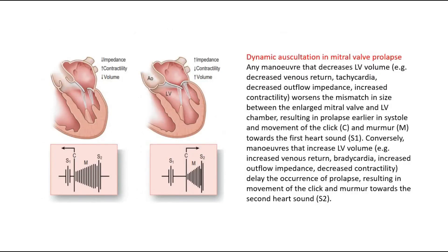This picture shows the dynamic auscultation in mitral valve prolapse. Any maneuver that decreases LV volume — such as decreased venous return, tachycardia, decreased outflow impedance, and increased contractility — worsens the mismatch in size between the enlarged mitral valve and LV chamber, resulting in prolapse earlier in systole and movement of the click and murmur towards the first heart sound.